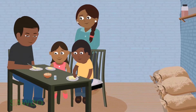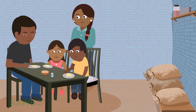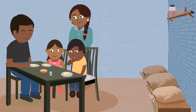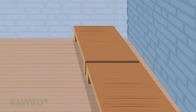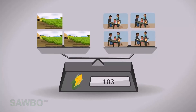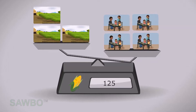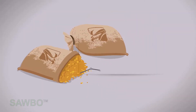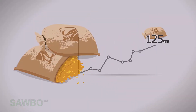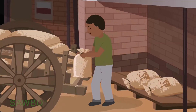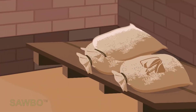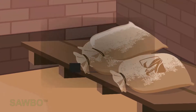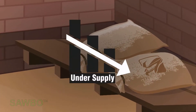Now we observe what happens when the people continue to consume the maize while the farmers have not produced any new maize yet. The scale gets out of balance. The maize price goes up to 125 units per bag. Prices go up when supply is lower than the demand. We call this situation under-supply.